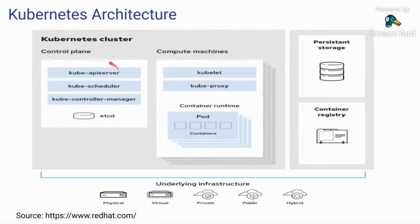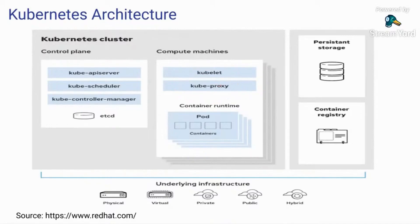Coming to the control plane — the control plane is nothing but a collection of processes that control Kubernetes nodes. It holds data about the cluster state and configuration, and handles the important work of making sure your containers are running in sufficient numbers with the necessary resources. For example, if you say you want three copies of your application, the control plane makes sure there's always three copies. Any node can go down at any point, so the control plane will restart containers on a different node altogether.